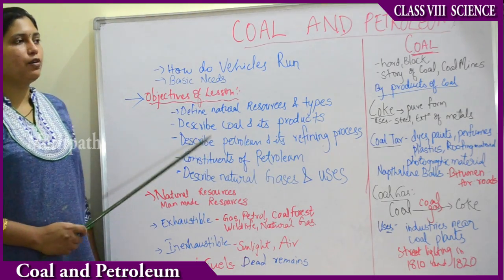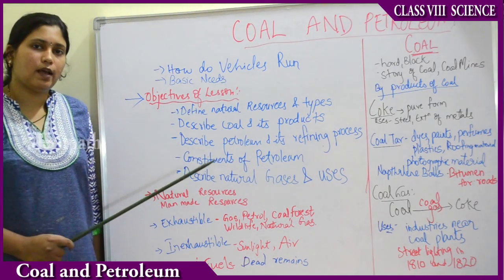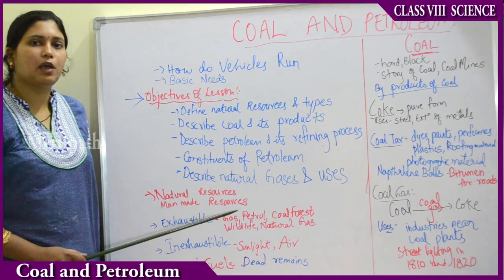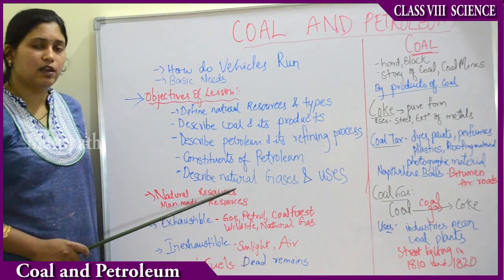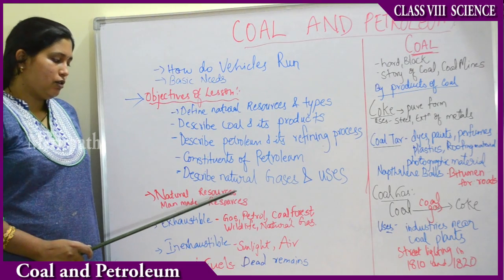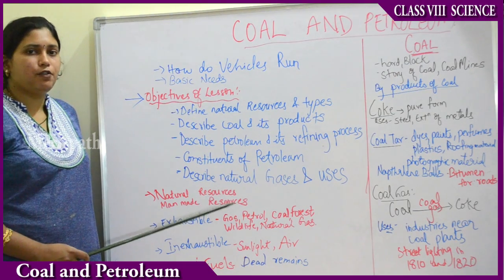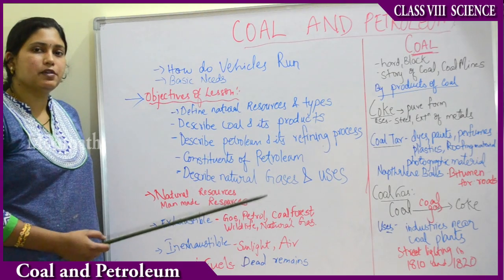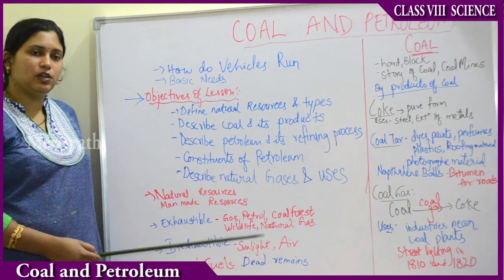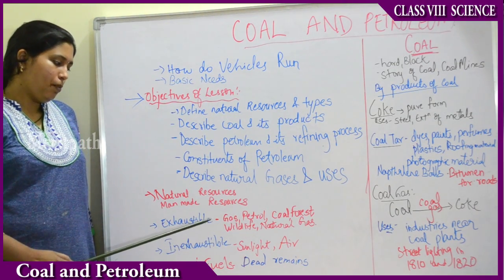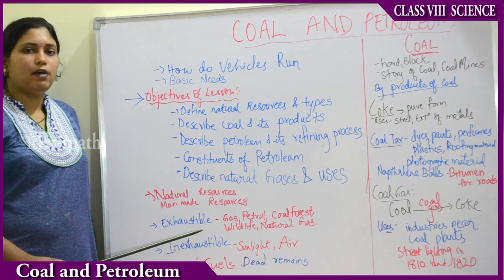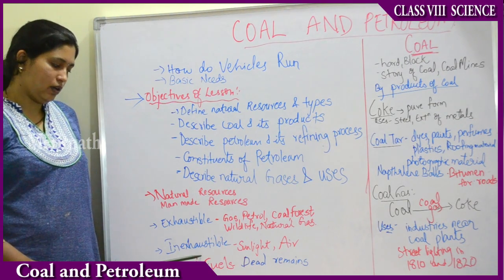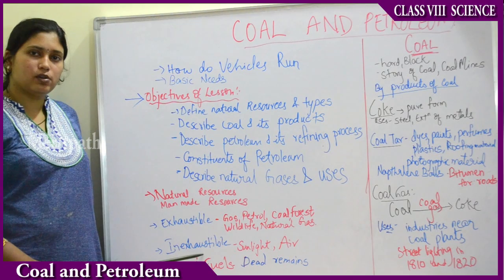Here we are going to talk about natural resources and manmade resources. There are two types of resources available in our world. Natural resources are those which are freely available to us, and manmade or artificial resources are those which are made artificially by man. Depending on availability, resources are of two types: exhaustible and inexhaustible natural resources.